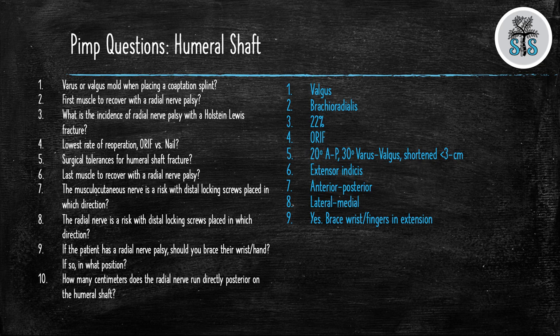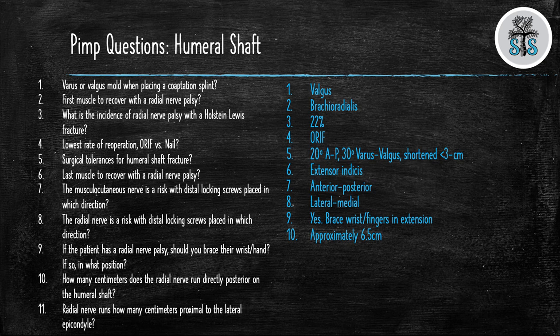How many centimeters does the radial nerve run directly posterior on the humeral shaft? Approximately 6.5 centimeters. The radial nerve runs how many centimeters proximal to the lateral epicondyle? 14 centimeters.